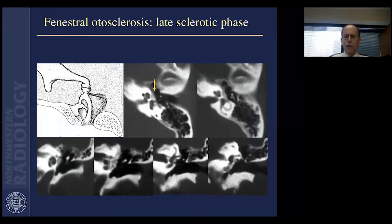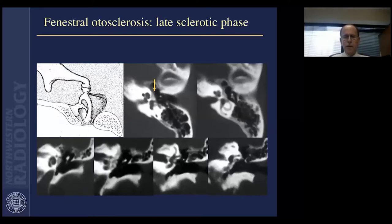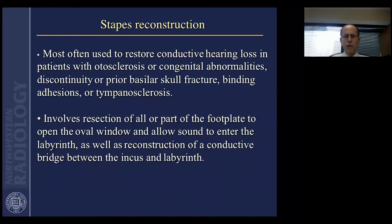This is a fairly common pattern of early fenestral otosclerosis. Later on, the stapes footplate becomes solidified into the surrounding bone. The yellow arrow points at that solid, thickened area of demineralized bone, which is not quite as dense as the rest of the otocapsule. In the later phase with sclerosis, it is still recognizable as a slightly different density than the denser, more medially located otocapsule. A concretion of bone at the oval window obliterates most of what you'd ordinarily see as a lucent window.